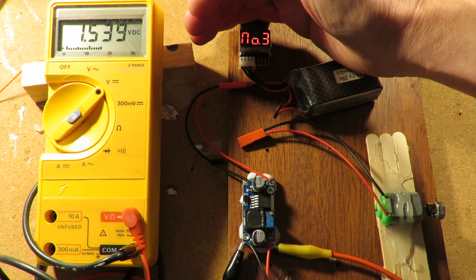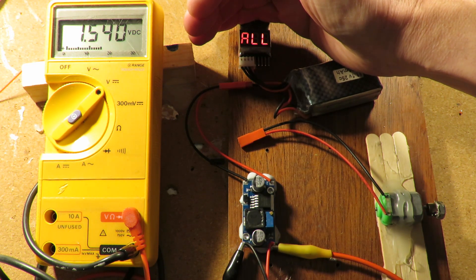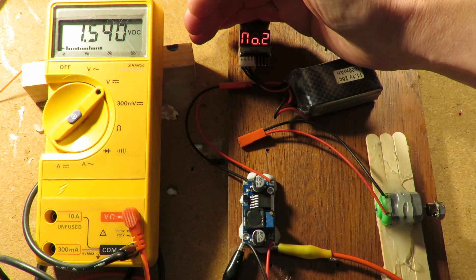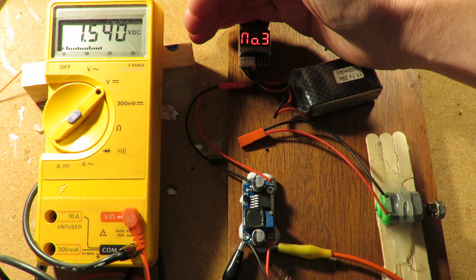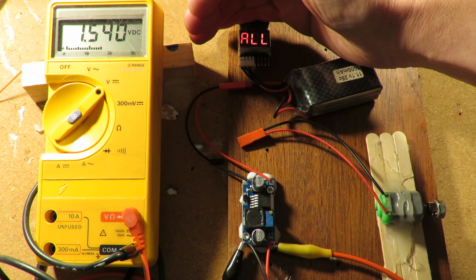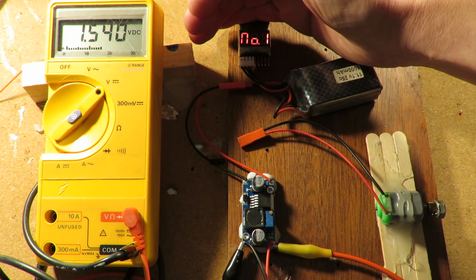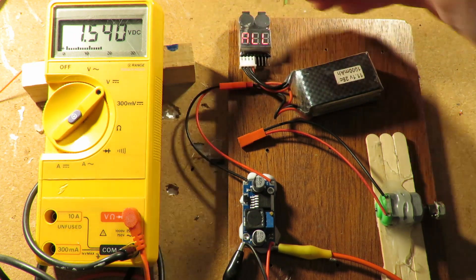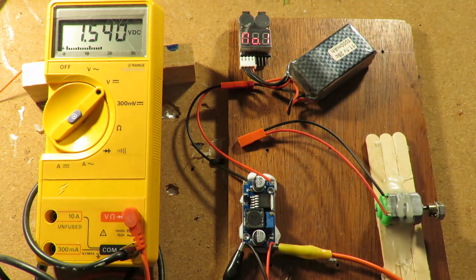That's a little LiPo alarm I got there. It's currently showing 11.6 volts with all three cells, and that tells you what each cell individually is: 3.89, 3.90, 3.89. So that's a reasonably well balanced 3 cell LiPo battery.